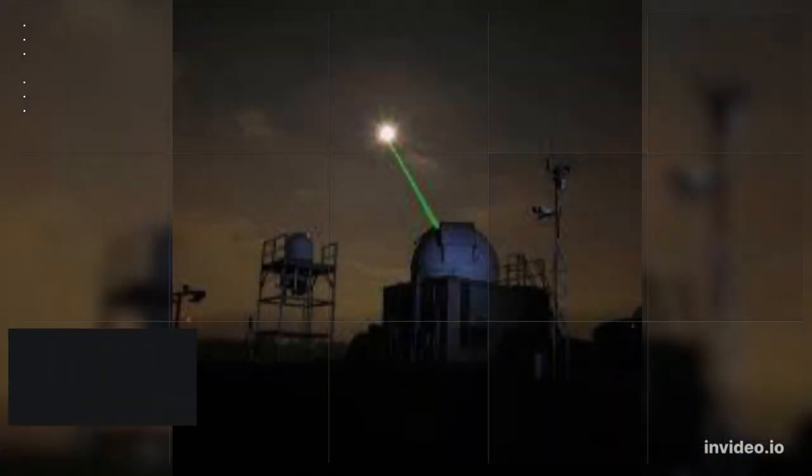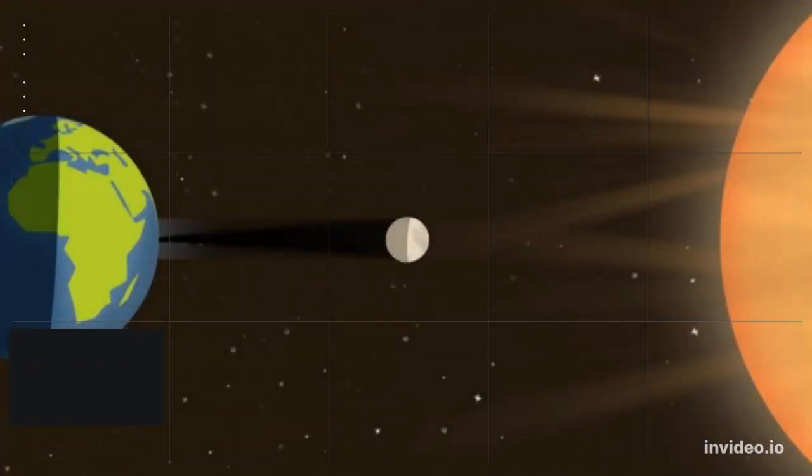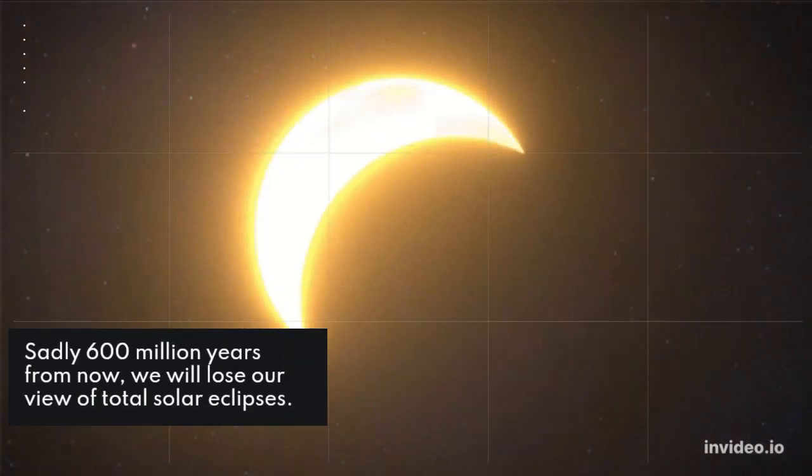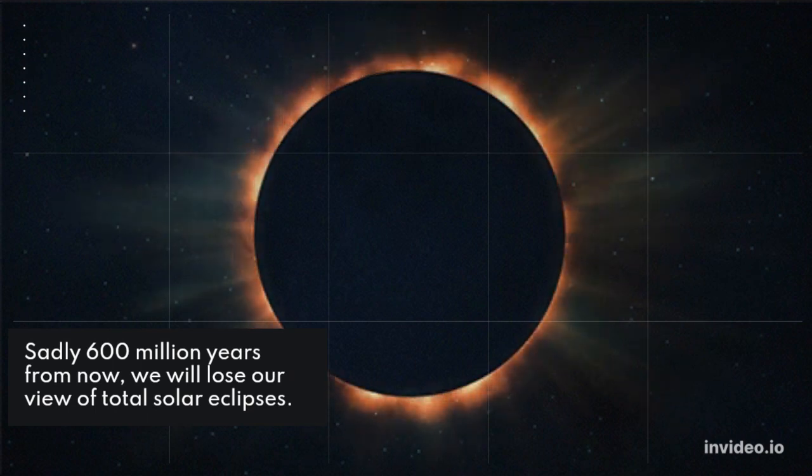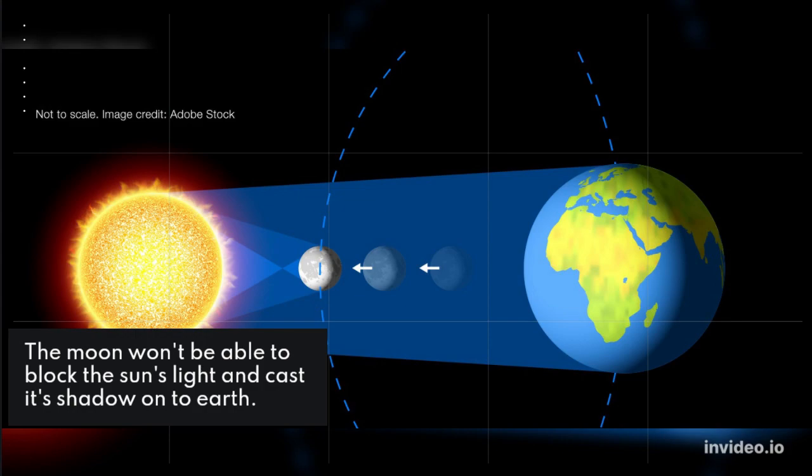Scientists have measured the retreat of the Moon by beaming lasers at it. Sadly, 600 million years from now we will lose our view of total solar eclipses. The Moon won't be able to block the Sun's light and cast its shadow onto Earth.